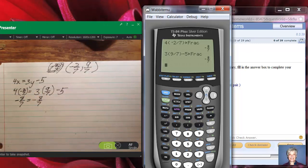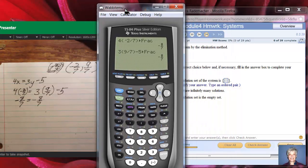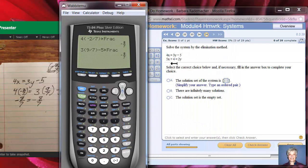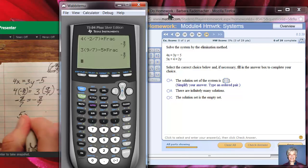But when I'm using elimination, I have to check both equations. So let me move the calculator over. The second original equation was 5x plus 4 equals 2y.